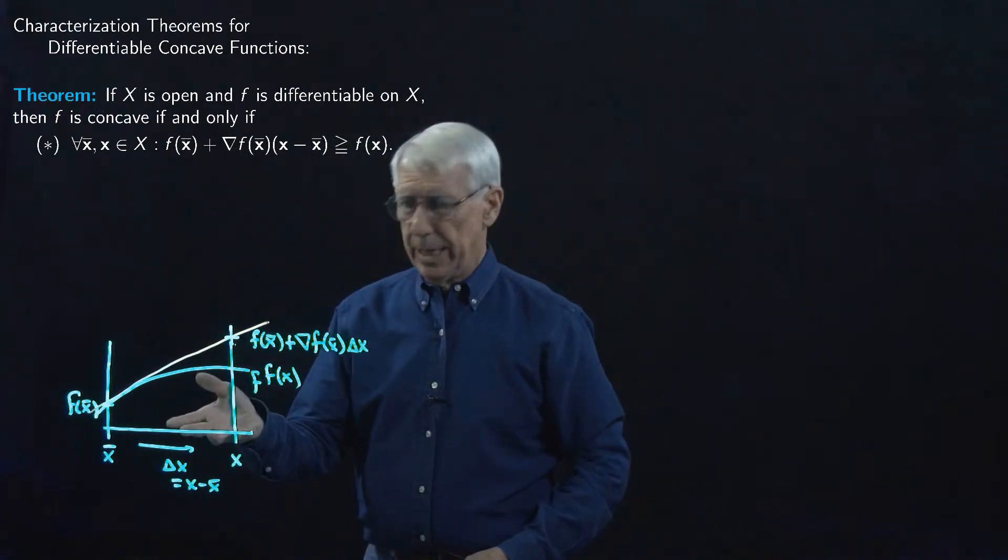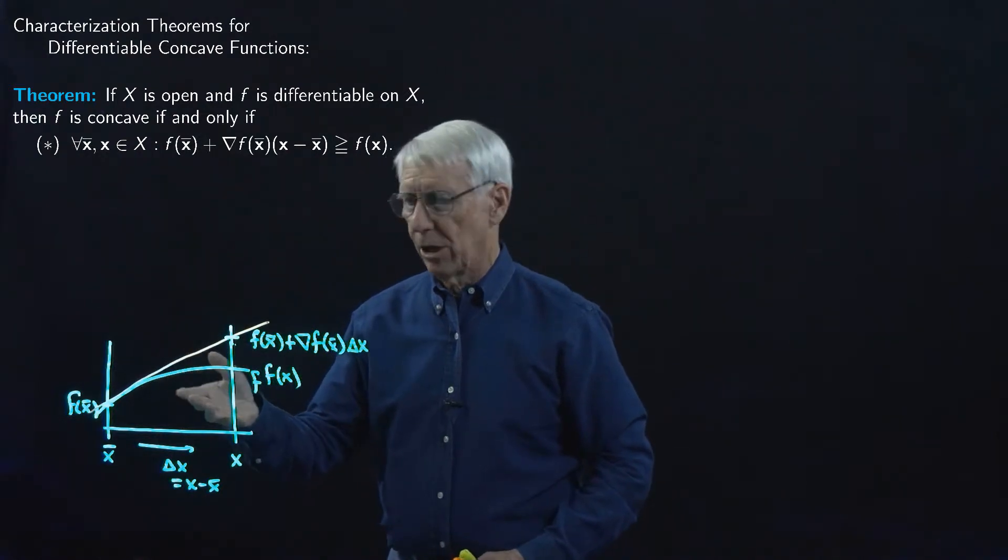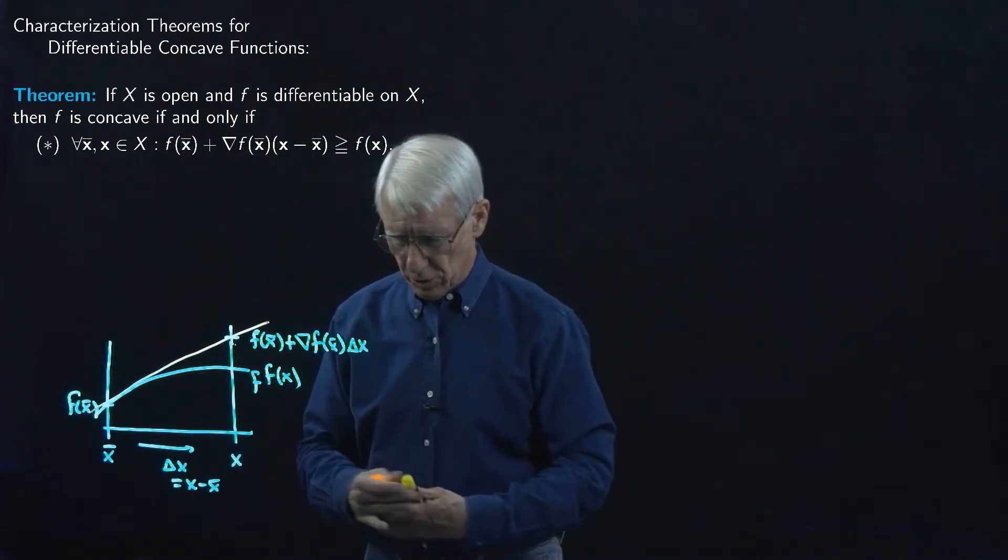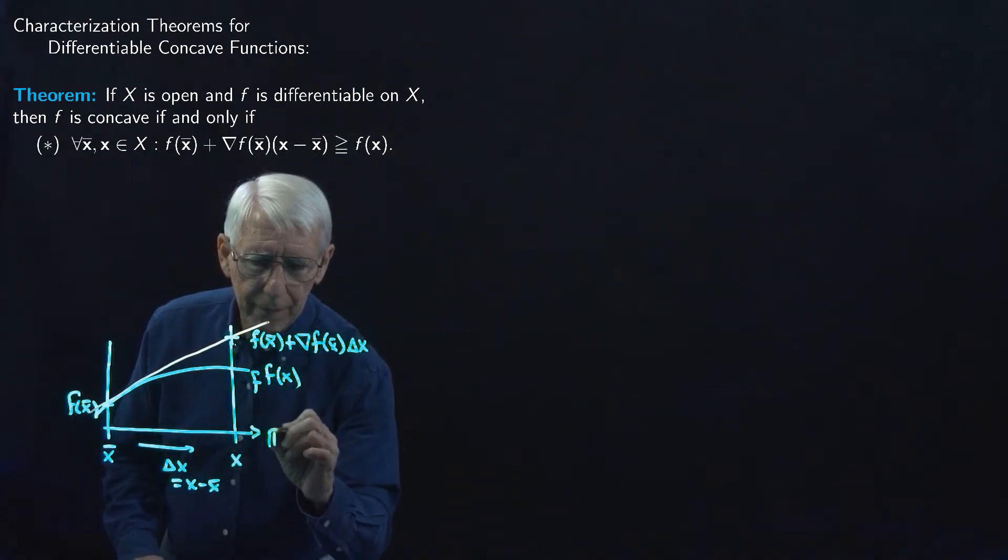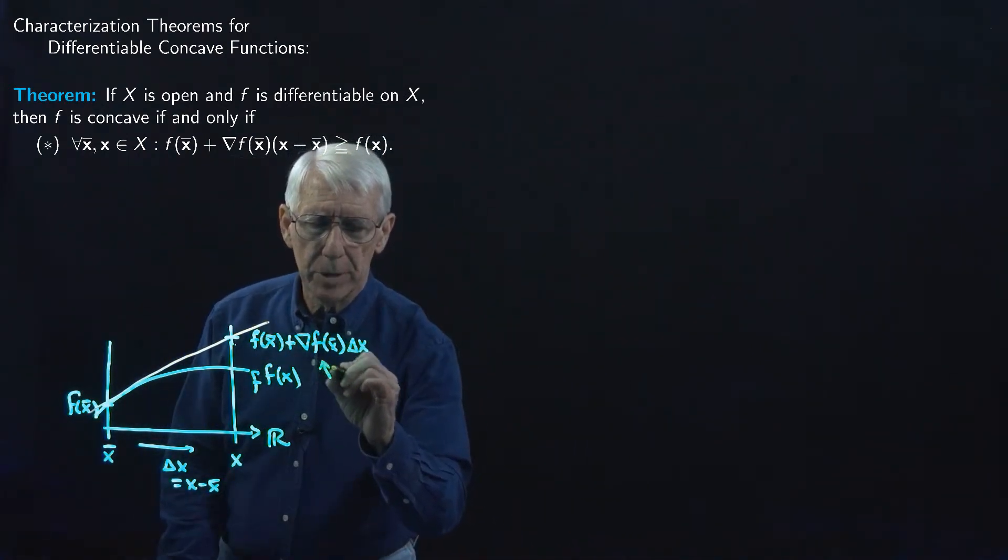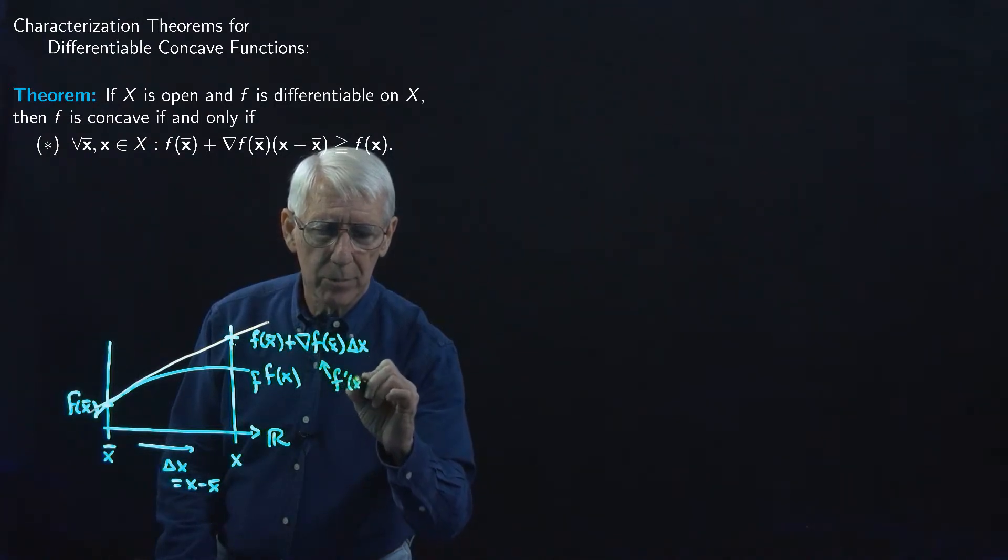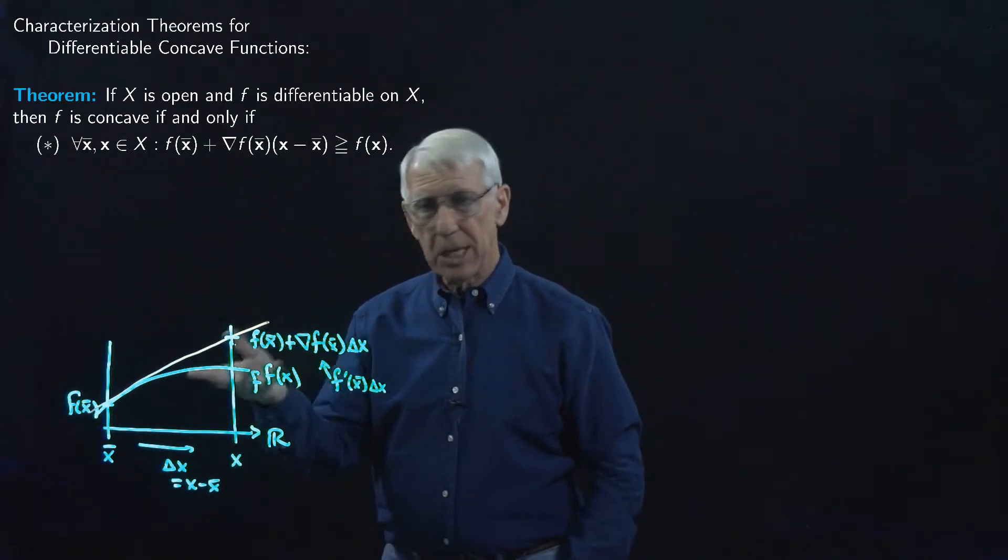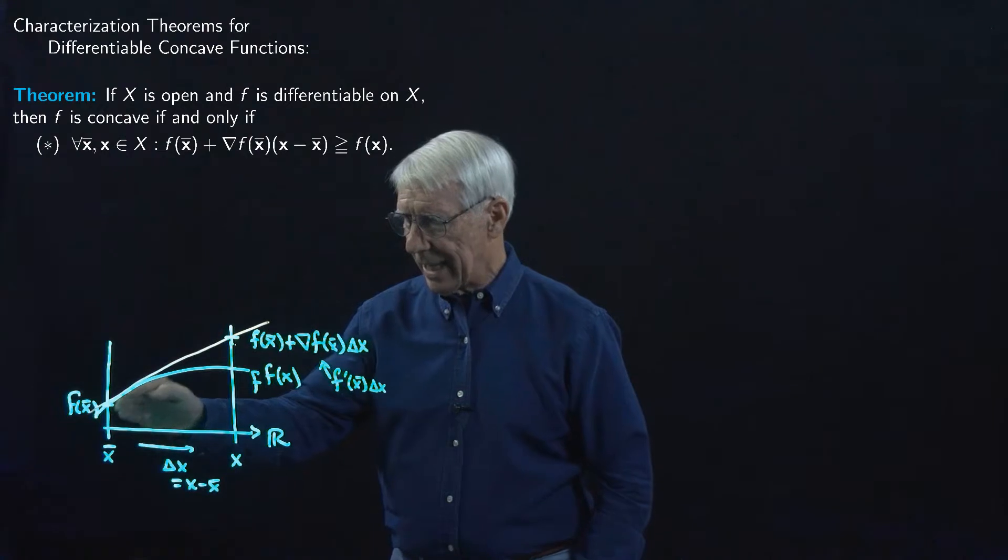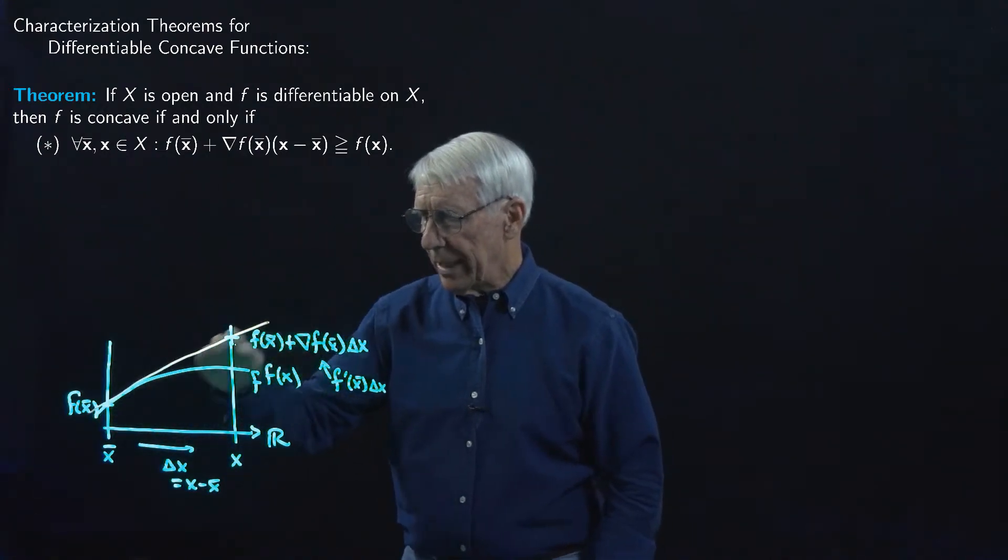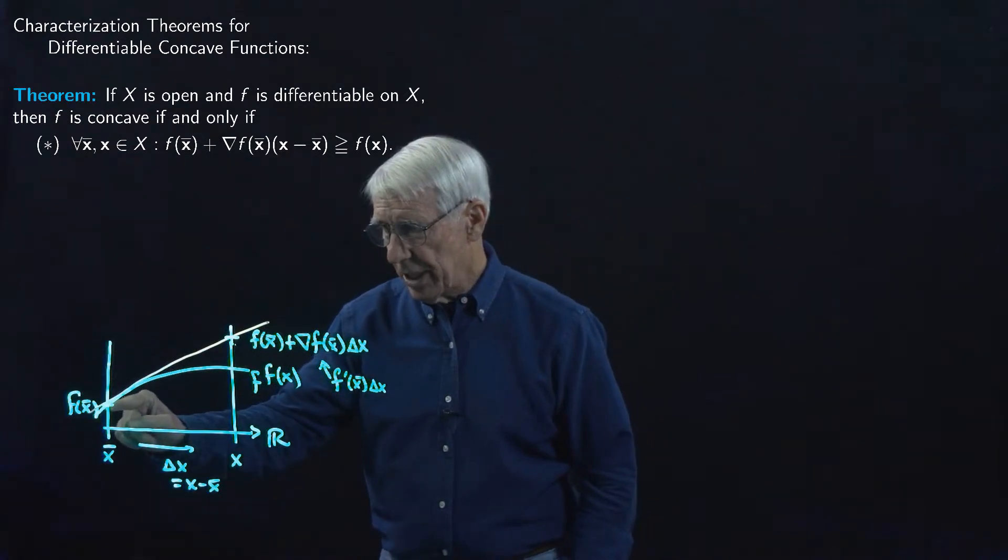So this is times delta X. What I've drawn is the picture for R, where the domain is just the real numbers. So let's say this is R. This would be the derivative. In fact, let me even write that this would be F' at X-bar times delta X. And so you can see the geometry here. It seems pretty obvious that if the function is concave, then it bends downward relative to the straight line which is tangent to the graph at X-bar.